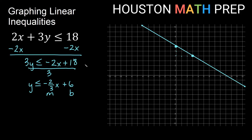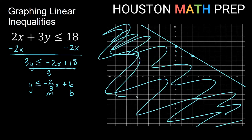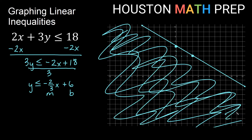Now we return to the inequality — the less than part. If y is less than something, that means smaller y values, which are below the line. So we shade everything below the line. Everything on the line and everything below the line is a solution for this inequality.